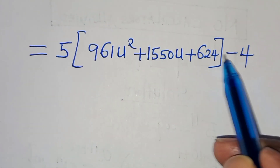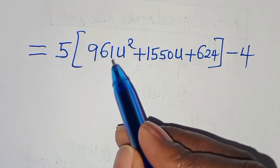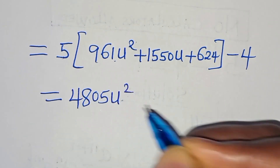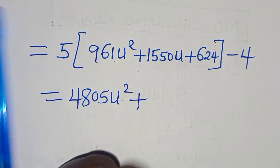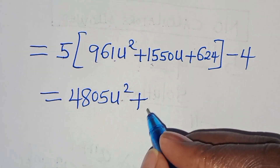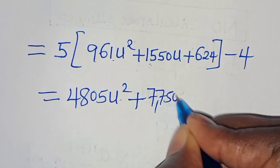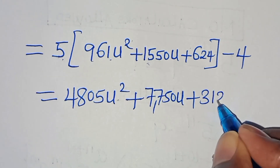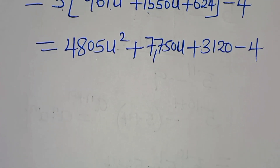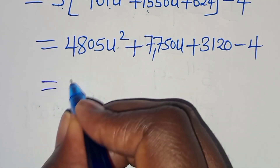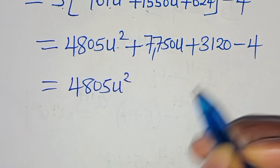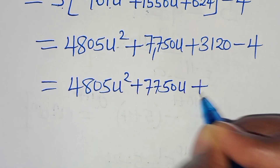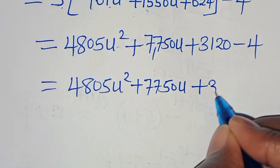Multiplying through by 5: 5 × 961u² = 4805u², 5 × 1550u = 7750u, and 5 × 624 = 3120. So we have 4805u² + 7750u + 3120 − 4, which equals 4805u² + 7750u + 3116.